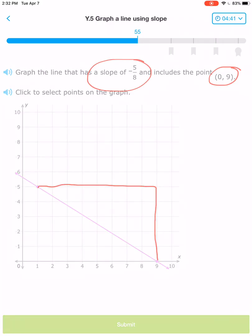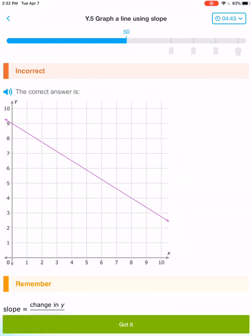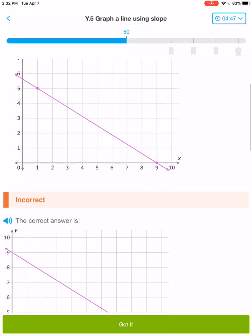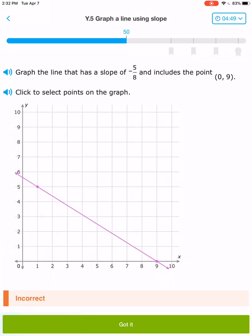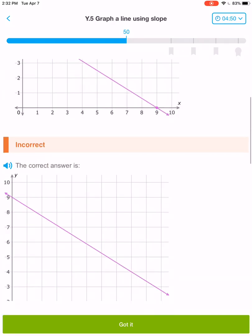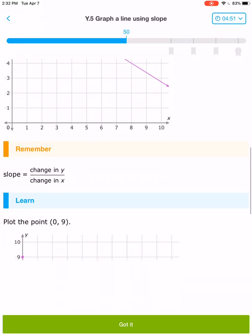So those are my two points. Submit. Oh no! What did I do wrong? Well, if you take a look, the point was (0, 9). And what mistake did I do?